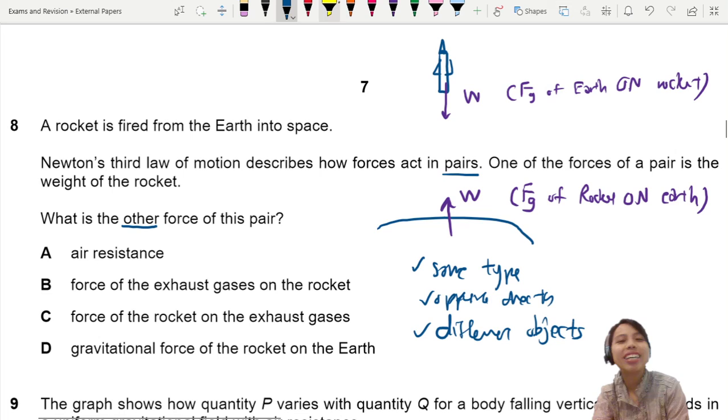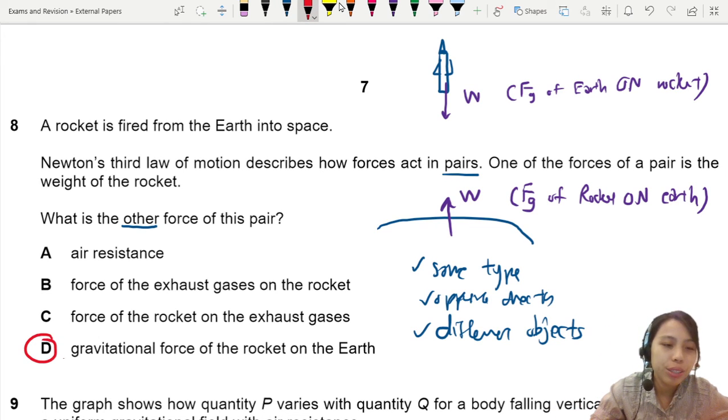So we can choose our answer. I think the best choice is D - gravitational force. The rest are not really the Newton Third Law pair. They're all very different types of forces, but they are not gravitational force.